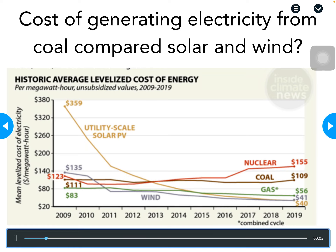This graph is looking at the average cost of different energies over time. The cost is shown on the vertical axis in dollars, and along the bottom we have years from 2009 to 2019 — so that's the most recent data on the far right. Each energy source is color coded and labeled, so we're comparing several different ones on their most recent cost. Record those dollar amounts in number six.